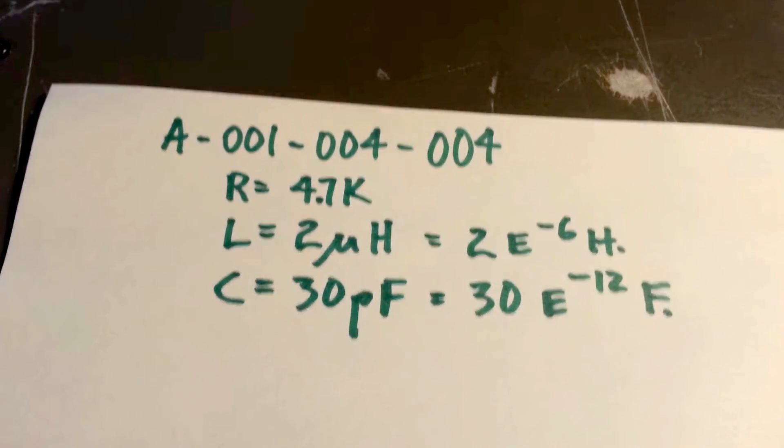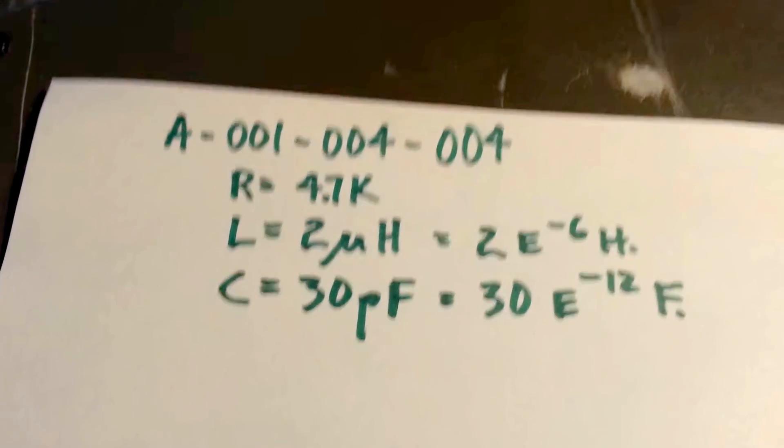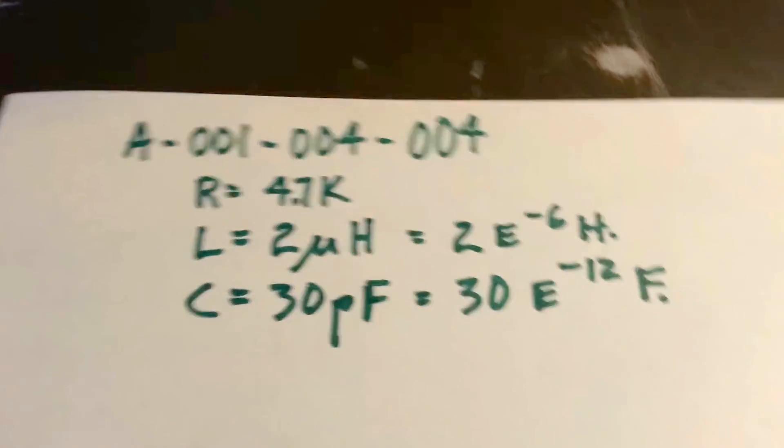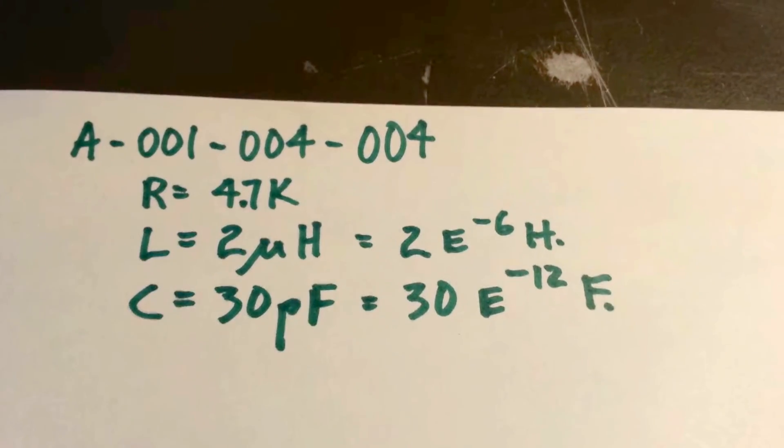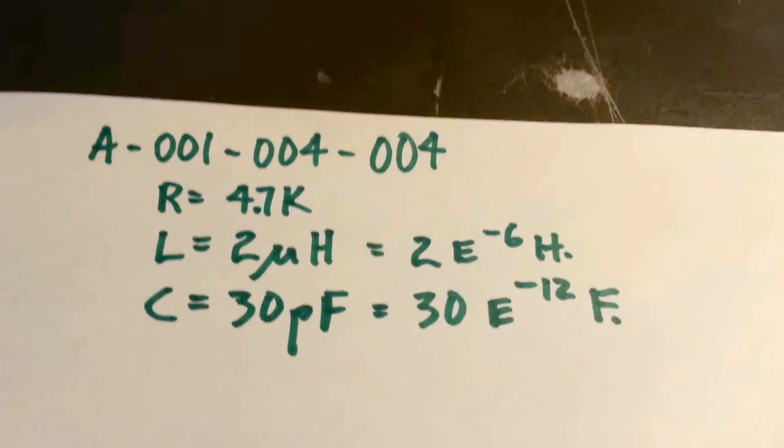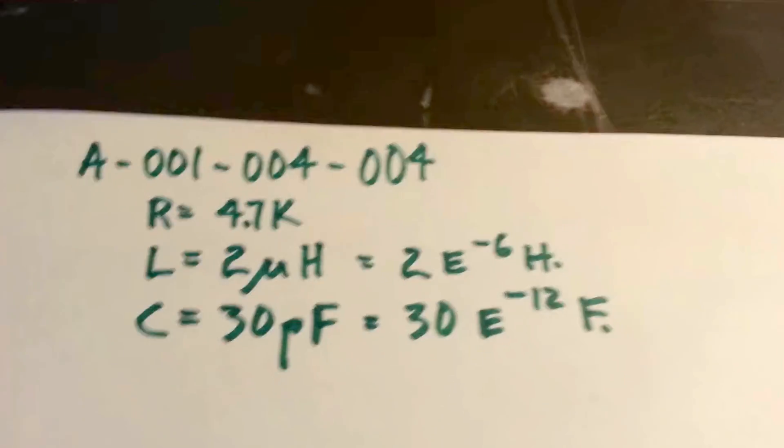What is the resonant frequency of a parallel RLC circuit? If R is 4.7 kilohms, and it doesn't matter what R is, R is just in there to confuse you. You don't need it. L is 2 microhenries, and C is 30 picofarads.